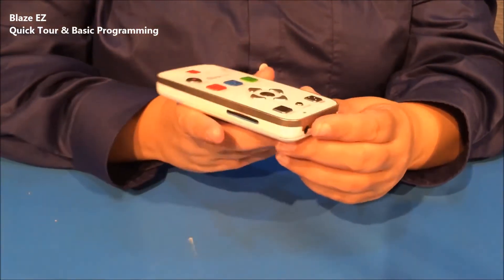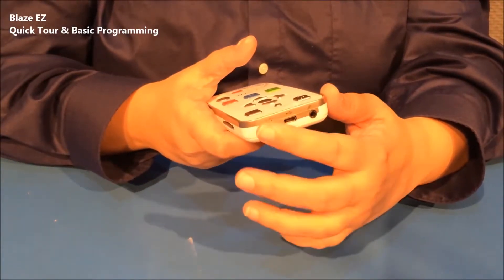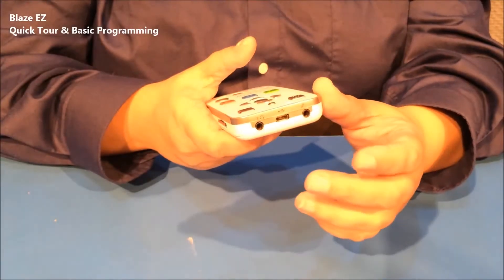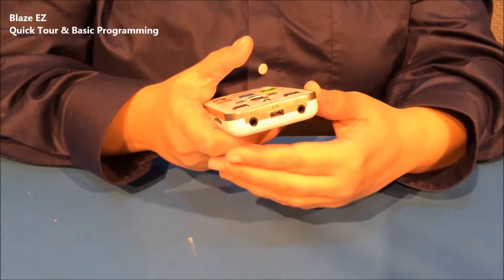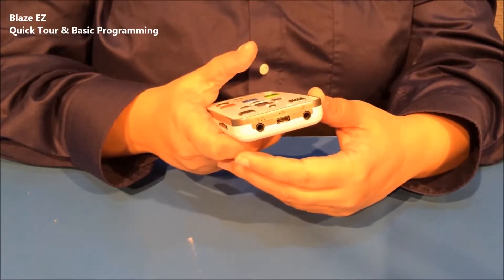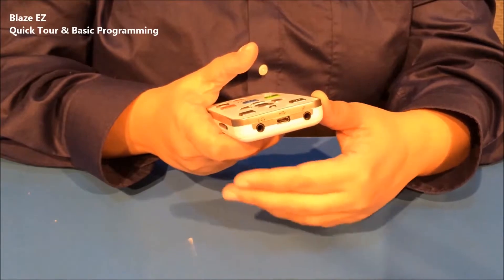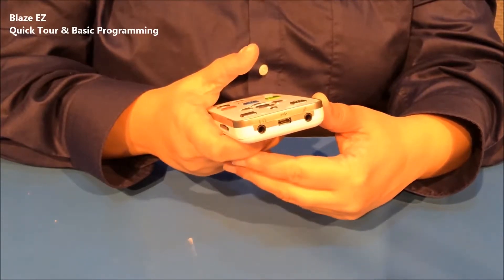And moving down to the bottom edge, we have three ports. We have the headphone jack, we have the micro USB port, and we have the stereo microphone jack. The micro USB port is used to connect the BlazeEasy to a PC, to connect it to the AC adapter, and also to connect the OCR remote. With the stereo microphone jack, you can connect a stereo mic or a line-in source.